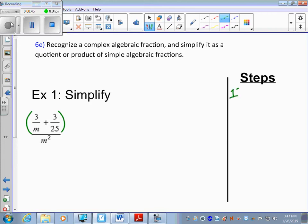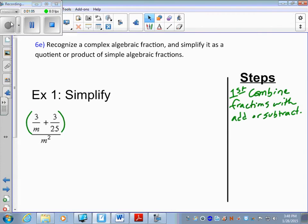Step 1: Combine fractions with addition or subtraction. To combine these, we learned earlier in Chapter 6 that to combine two fractions, you have to have like denominators.